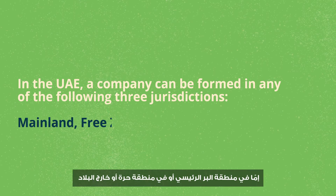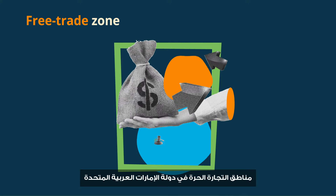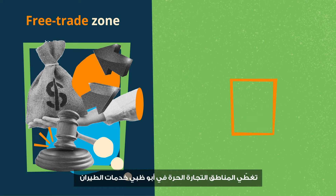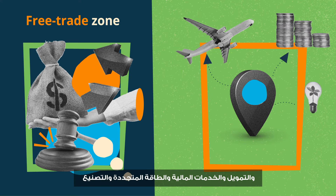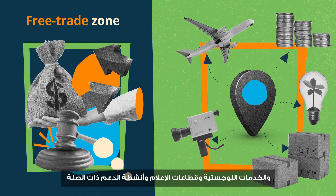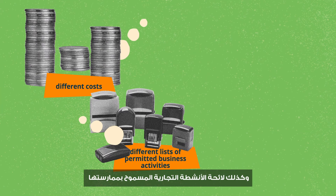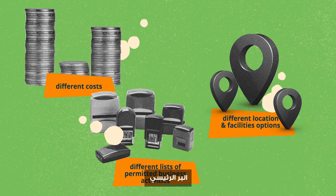In the UAE, a company can be formed in any of three jurisdictions: mainland, free zone, and offshore. Free trade zones are areas that have a special tax, customs, and import regime, governed by their own framework of regulations except for criminal law. The free zones available in Abu Dhabi broadly cover aviation, finance and financial services, renewable energy, manufacturing, logistics, and media sectors. Each free zone has different costs, different lists of permitted business activities, different location and facilities options, as well as different share capital requirements.